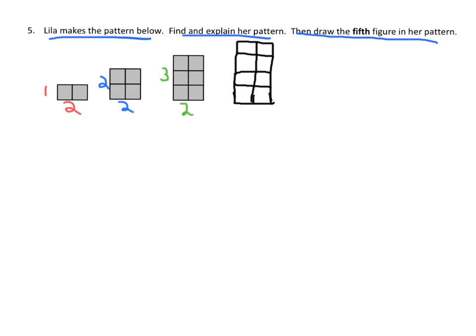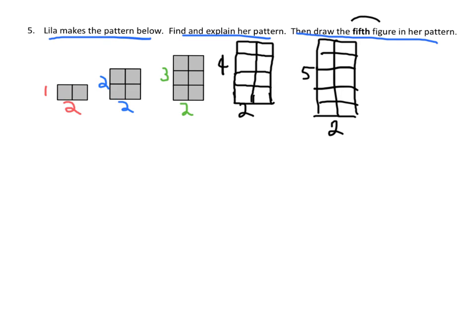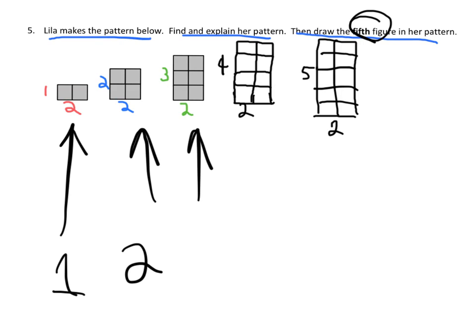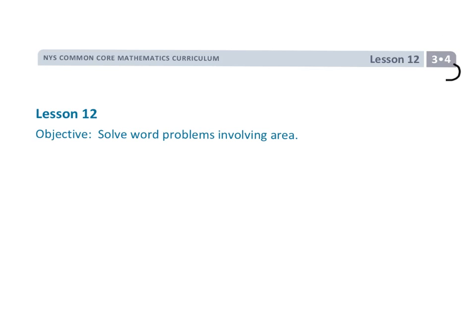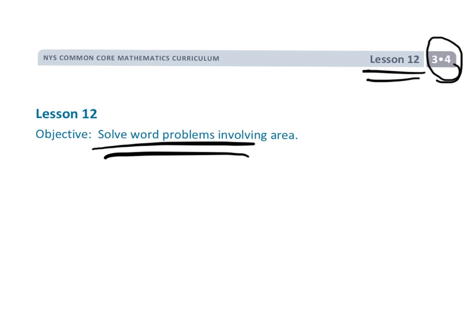The fifth figure is going to be 5 by 2. So drawing them out: first figure, second figure, third figure, fourth figure — and here is our fifth figure. That's our answer. That wraps up this video: Grade 3 Module 4 Lesson 12, solving word problems involving area.